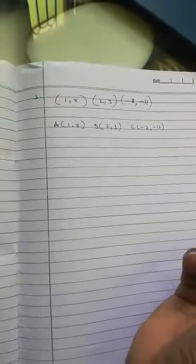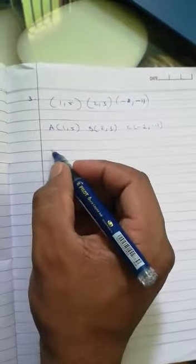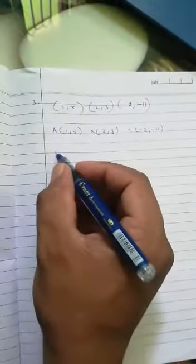The next question, question number three: determine if the points are collinear. So we are going to prove if this is collinear or not. Here first you take A, B, C. I mentioned it here first we'll take A B.